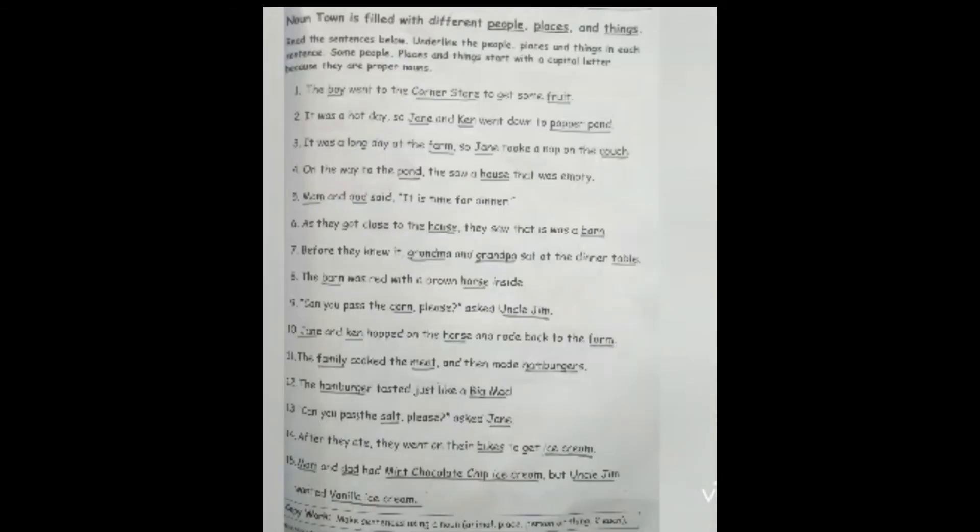After doing that, come on to page number 29. Here you have some sentences written and you have to underline the nouns here. The nouns are name, place, animal, and things. Now here you have to underline all the nouns in each line.